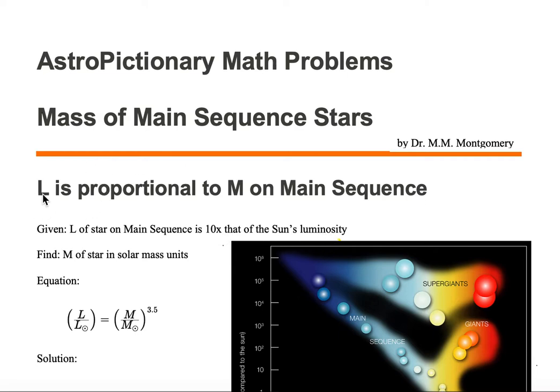One thing we know is that luminosity is proportional to mass on the main sequence. So we want to find this relationship and solve for the mass.